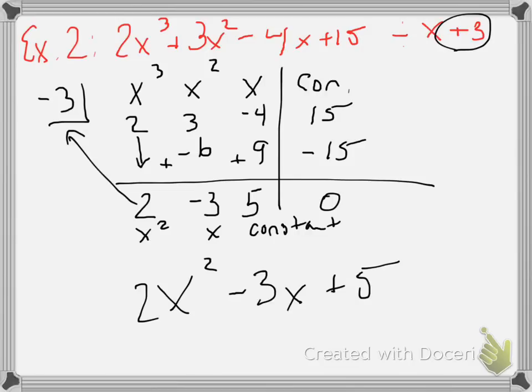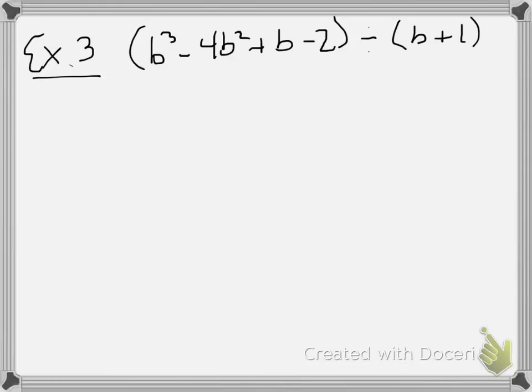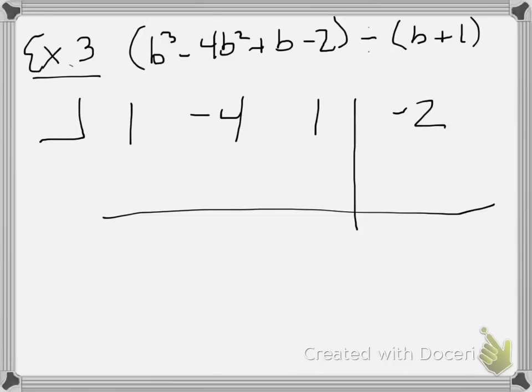We're going to try one more. And let's look at what happens if there is a remainder. This third example is not going to divide evenly. We've got b³ - 4b² + b - 2 divided by b + 1. So we'll set everything up. We'll put our numbers in: 1, -4, 1, and -2. Draw my lines. Inside my divisor, remember we take the opposite of the number. The number is positive 1, so we'll put in a -1. And then from here, it's just arithmetic. So we'll drop the first term.